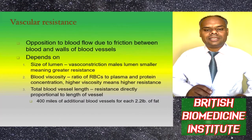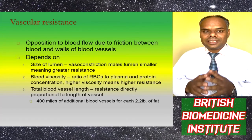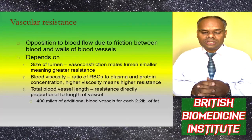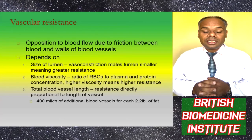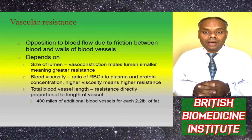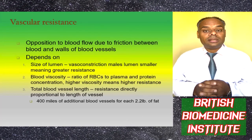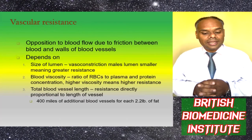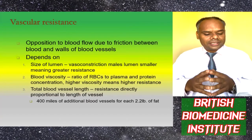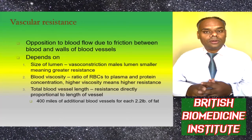Vascular resistance is the opposition to blood flow due to friction between blood and the walls of blood vessels. It depends on the size of the lumen: vasoconstriction produces a smaller lumen and greater resistance. Blood viscosity is the ratio of red blood cells to plasma and protein concentration; higher viscosity means higher resistance. Total blood vessel length is directly proportional to resistance — for example, approximately 400 miles of additional blood vessels for each 2.2 lb of fat.